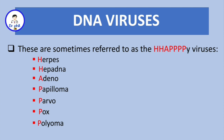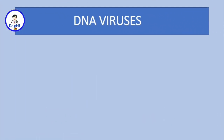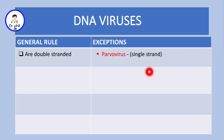DNA viruses have general characteristics with few exceptions. For example, most DNA viruses are double-stranded, except parvovirus, which is actually single-stranded. And if you know your Latin, parvos means small, so it's a small virus, and it's single-stranded.